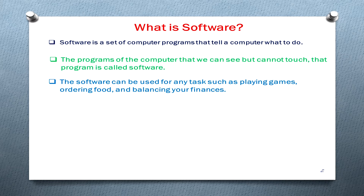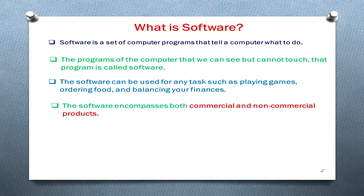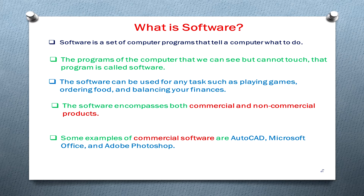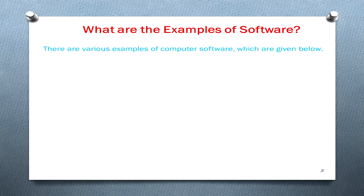Software can be used for any task such as playing games, ordering food, and balancing your finances. Software encompasses both commercial and non-commercial products. Some examples of commercial software are AutoCAD, Microsoft Office, CorelDRAW, and Photoshop.